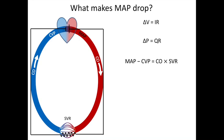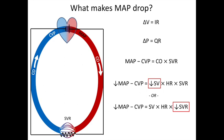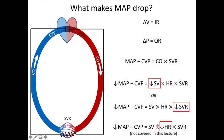Cardiac output can be broken down into stroke volume and heart rate. So putting it all together, any drop in mean arterial pressure is from a drop in stroke volume or a drop in systemic vascular resistance. A decrease in heart rate also causes a decrease in MAP, but that's a very particular circumstance — bradycardia — and tends to be more obvious at the bedside. This lecture specifically focuses on low MAPs due to a low stroke volume or a low systemic vascular resistance.